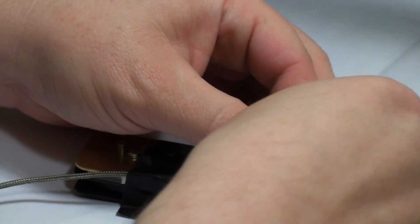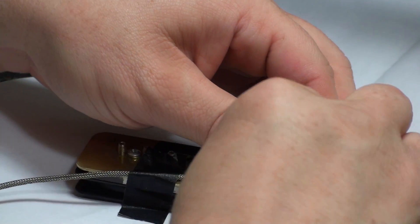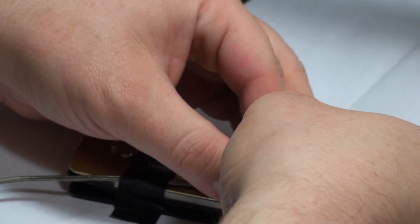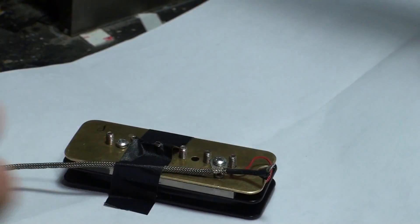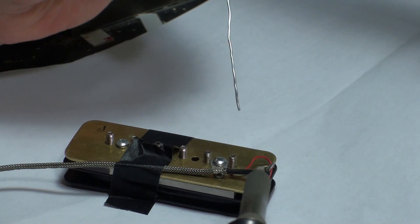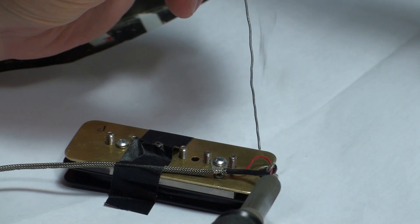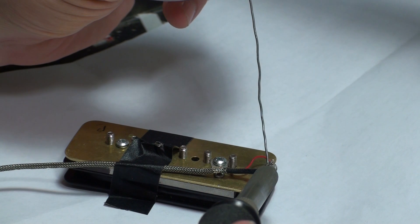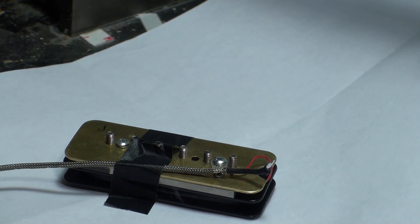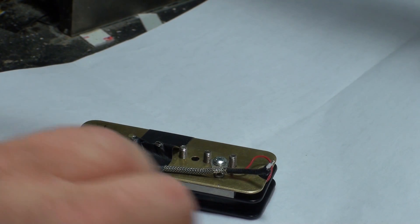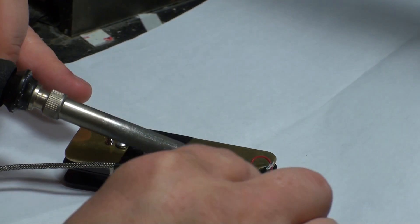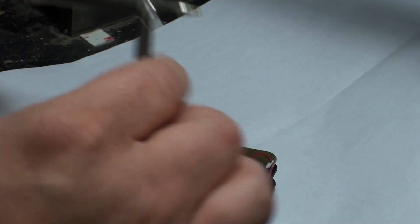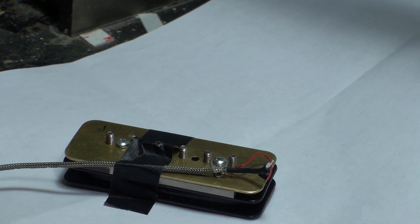Now we take the black lead and we solder it there. Now since I've moved this braided lead a bit, we want to reposition that back to where it should be.